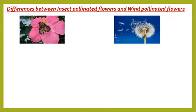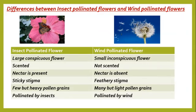Let's look at the differences between insect-pollinated and wind-pollinated flowers. First, insect-pollinated flowers are large and conspicuous — the word conspicuous means clear or easily seen. Wind-pollinated flowers are small and inconspicuous; they cannot be seen easily. Second, insect-pollinated flowers are usually scented, while wind-pollinated flowers are not scented.